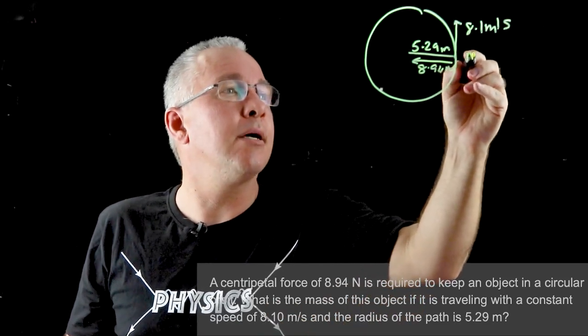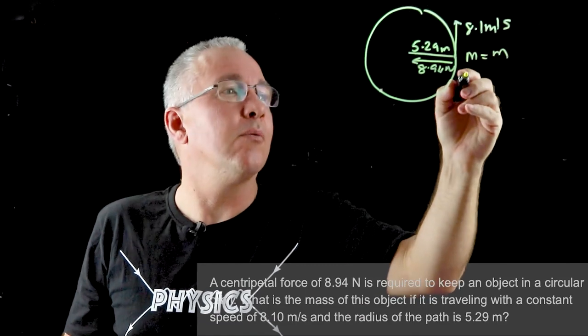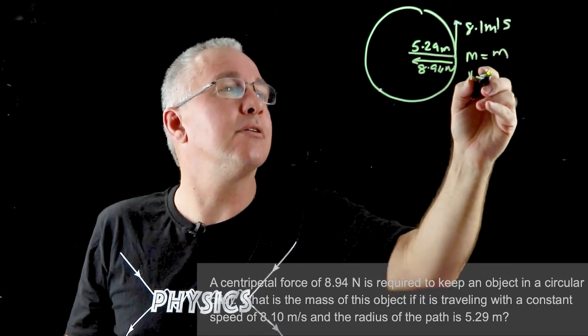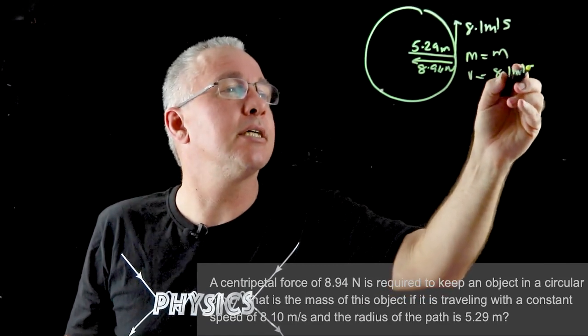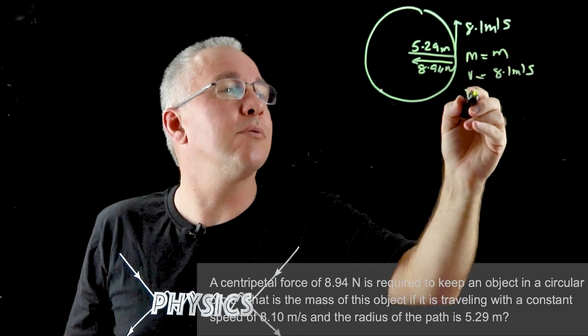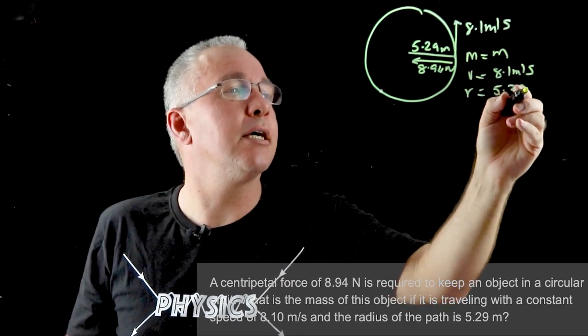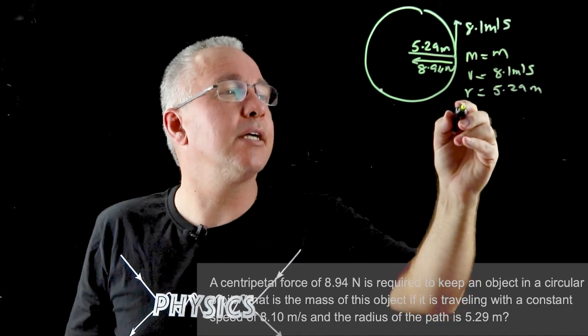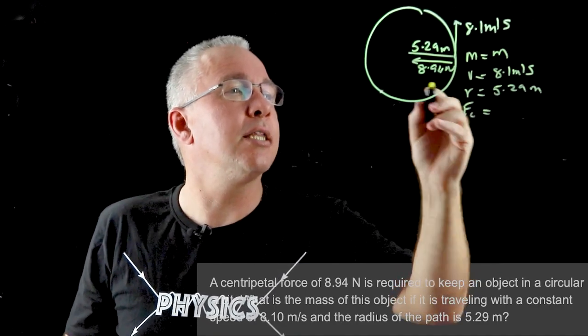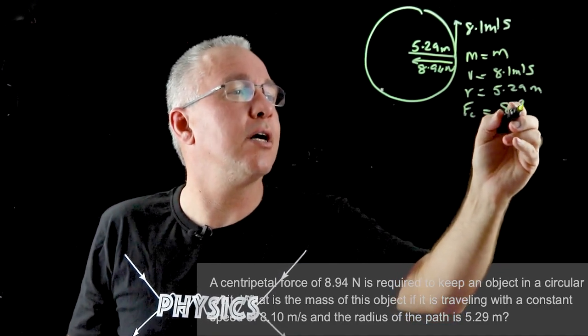So we have our m which is our question mark, we have our v which is given as 8.1 meters per second, we have our r which is equal to 5.29 meters, and finally we are given our centripetal force and that is equal to 8.94.